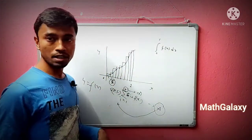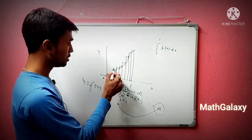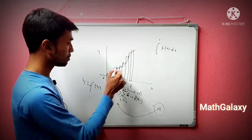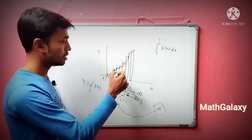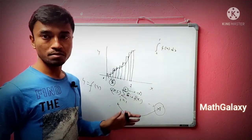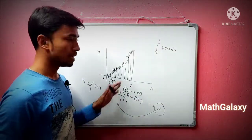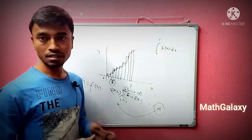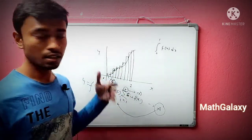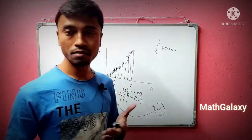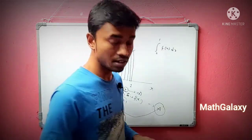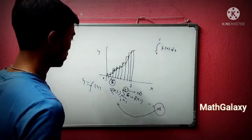The problem here is that when we calculate this, certain extra terms arise — these are called errors, or excess terms. This kind of formulation is basically called Riemann formulation. In this same setup, we can also define what Riemann-Stieltjes integration is. So let us define Riemann-Stieltjes integration in this same framework.